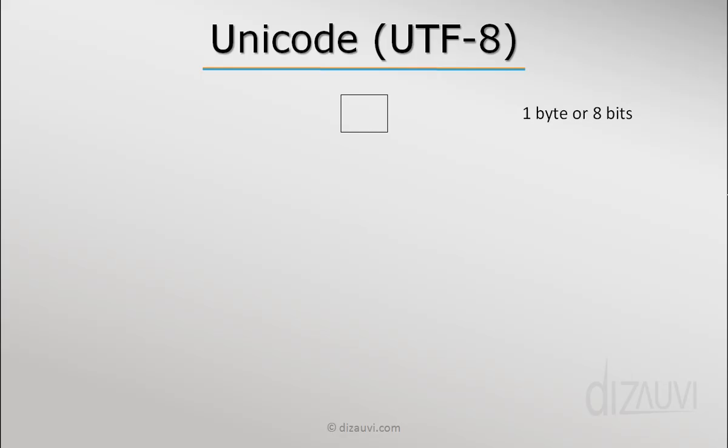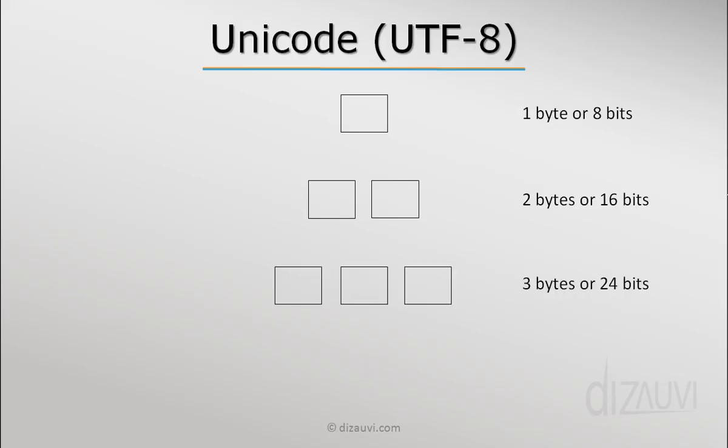Contrary to what many think, UTF-8 is not just a fixed 8-bit character set. It is a multi-byte character set in which a character can be represented in 8 bits (1 byte), 16 bits (2 bytes), 24 bits (3 bytes), or 32 bits (4 bytes). It is named UTF-8 because characters are represented in multiples of 8 bits.